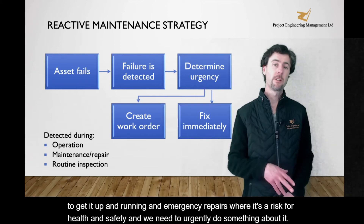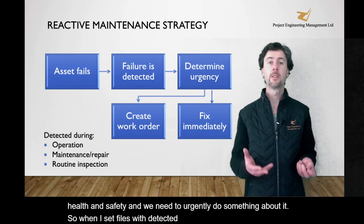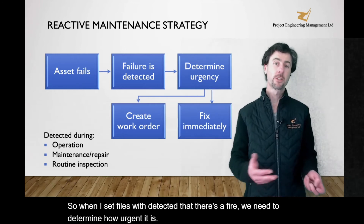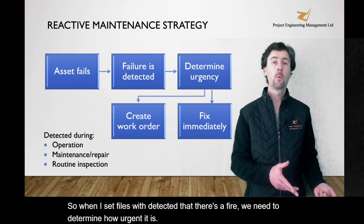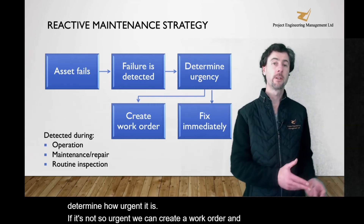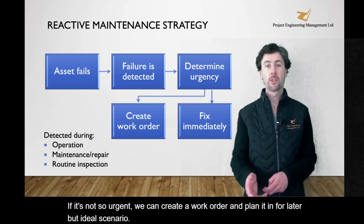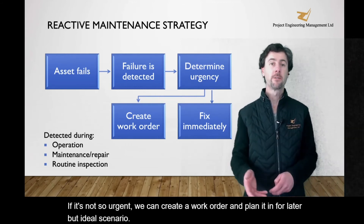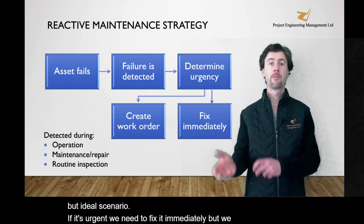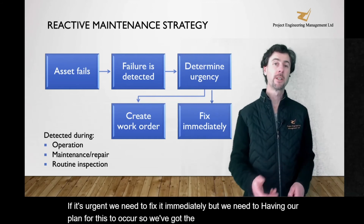So when the asset fails and we've detected that there's a failure, we need to determine how urgent it is. If it's not so urgent, we can create a work order and plan it in for later — the ideal scenario. If it's urgent, we need to fix it immediately, but we need to have in our plan for this to occur so we've got the spare parts and the resources ready to go.